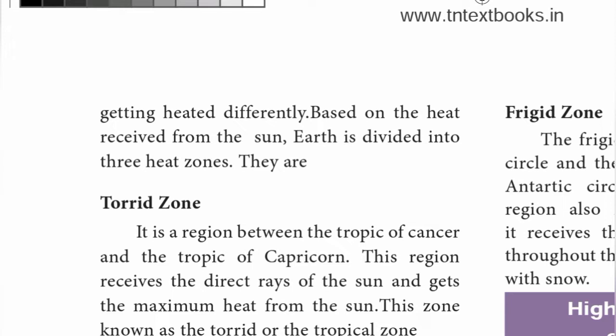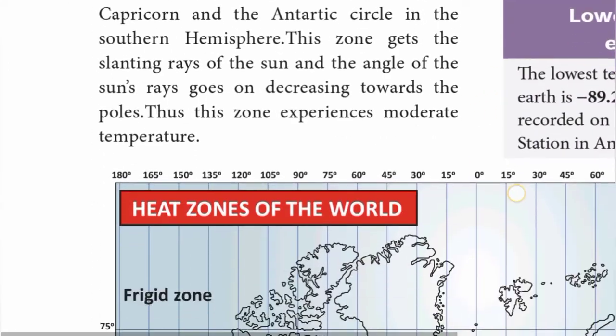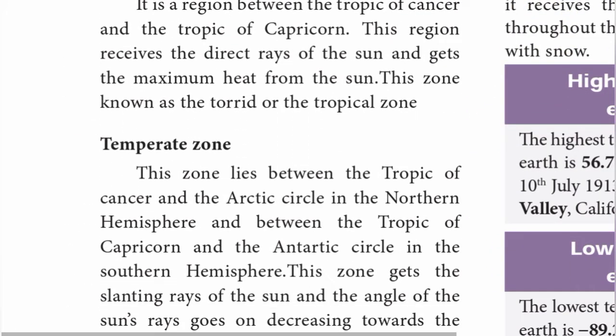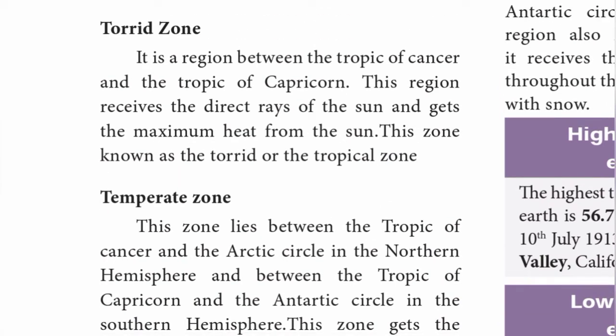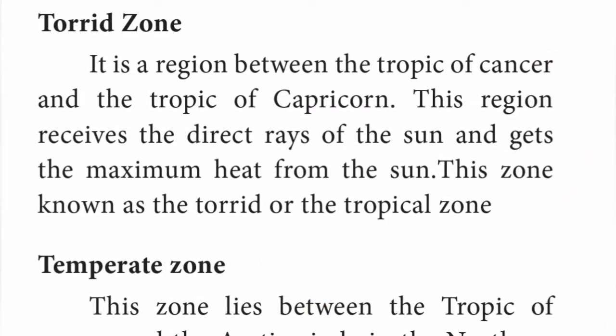Based on the heat received from the sun, we have three heat zones: the torrid zone, the temperate zone, and the frigid zone. The torrid zone is the region between the Tropic of Cancer and the Tropic of Capricorn. This region receives the direct rays of the sun and gets the maximum heat. This zone is known as the torrid or tropical zone.